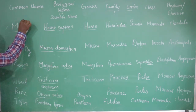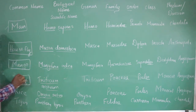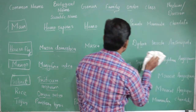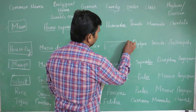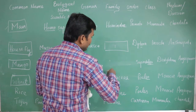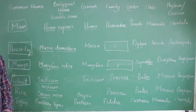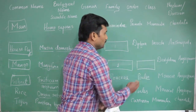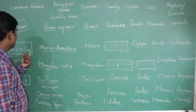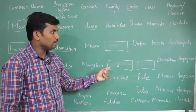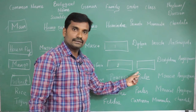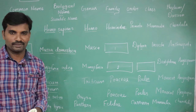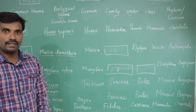Basically in our NCERT book, only four names are given. Please keep in mind clearly only those four names. Rice and tiger are extra information I gave. In the examinations, previous year exams, they ask these questions — identify number 1 and 2, match them. For example: house fly belongs to family Muscidae; Mangifera belongs to family Anacardiaceae, order Sapindales. The remaining things we will discuss in the next class, students.